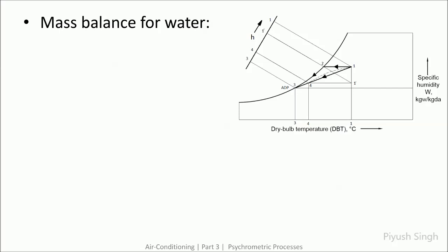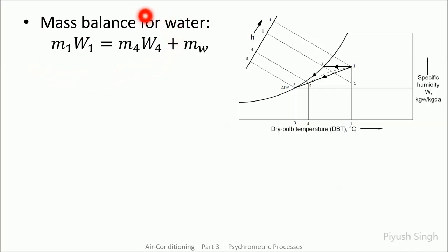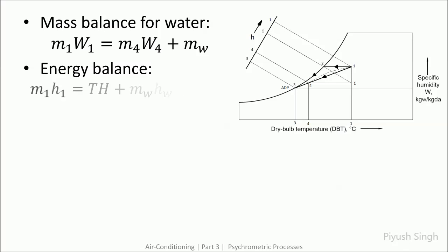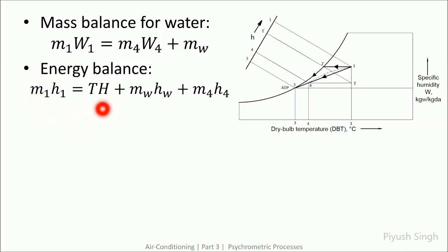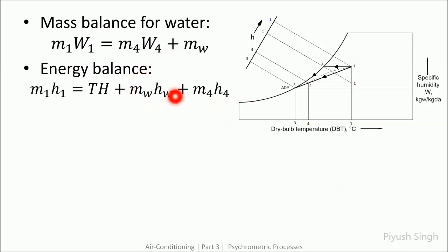For the mass balance of this process: M1W1 is the amount of water vapor entering, M4W4 is the condition at the outlet, and MW is the amount of condensation taking place. For the energy balance: M1H1 is the enthalpy of air entering the system, TH is the total enthalpy drop during the process, MWHW is the enthalpy of water removed from the air, and M4H4 is the final enthalpy of the outgoing air.